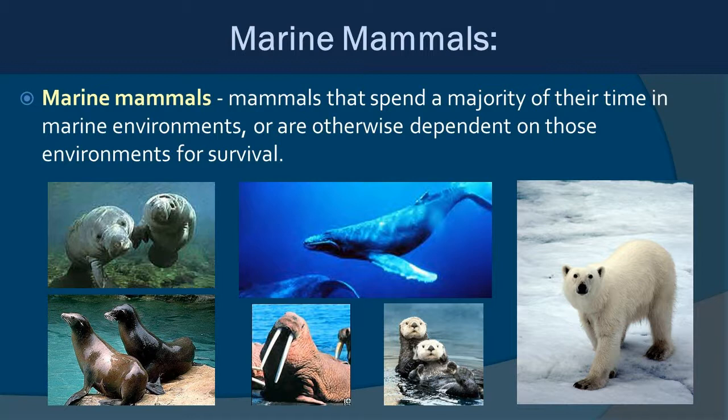That doesn't mean some aren't linked together through phylogenetic classification, but they're not all connected. For example, the polar bear on the right is not necessarily connected to cetaceans like whales and dolphins, or sirenians — other than the fact that they're all mammals, making them more related to each other than, say, an iguana.